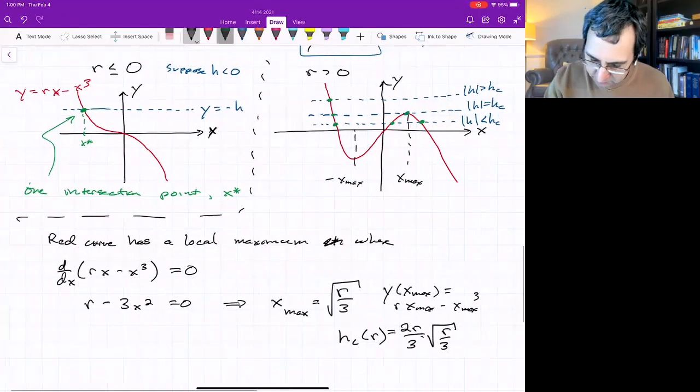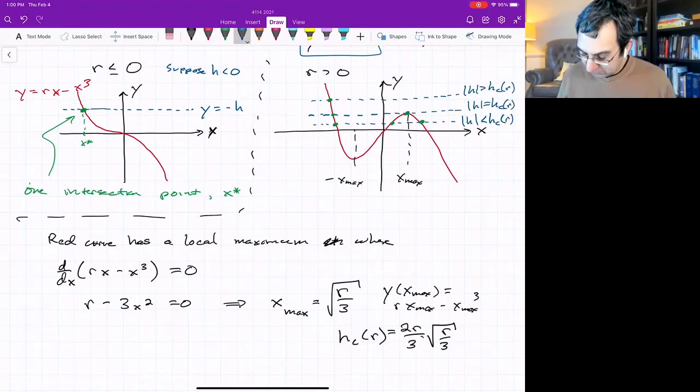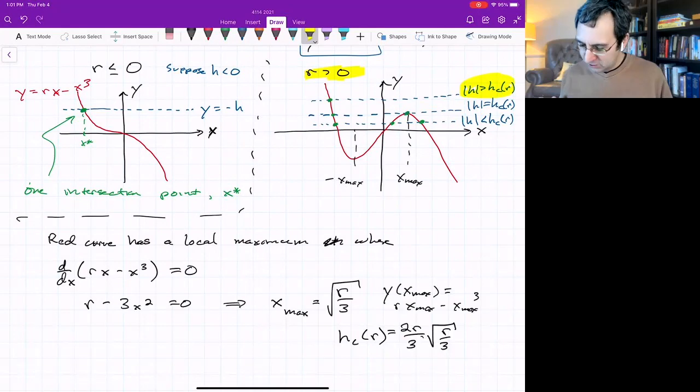And so notice that hc is a function of r. So maybe over here, if I was to be a little bit more careful, I'd say, well, this is a function of r. That's nice. We've got an explicit formula for this. If we were to summarize our results so far, looking at the case r greater than zero, that's the only interesting part. When the magnitude of h is greater than h critical, we've just got one point. When it's less than h critical, we've got three points. And then there's these sort of degenerate cases where we've got just two.